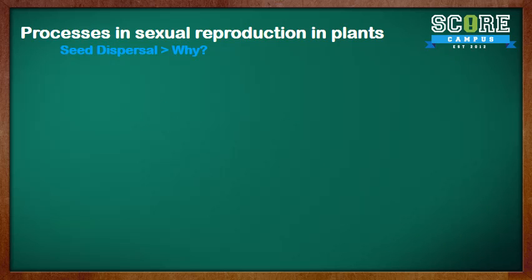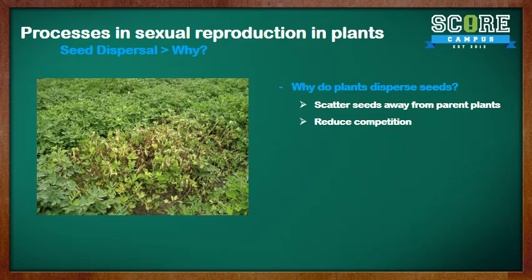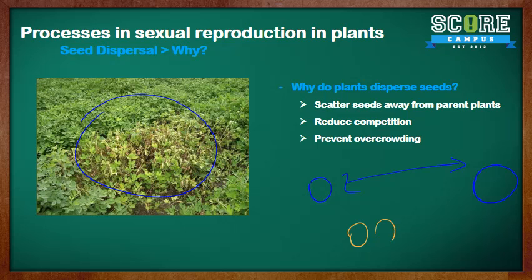The next process in sexual reproduction in plants is seed dispersal. First, why do plants disperse their seeds? Dispersal of fruits and seeds helps to scatter them away from the parent plant. This reduces competition between parent plants and young plants, and prevents overcrowding. If plants are too close together, they compete for the same nutrients, water, and sunlight. If the mother plant disperses seeds far away, there is no competition because they are very far apart.